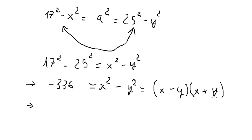We know that x plus y is 28, so we divide both sides by 28 and get x minus y equals negative 12.